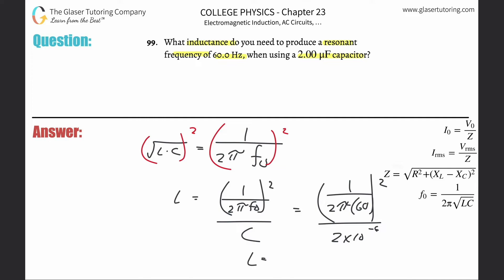And then let's plug it all in. So there's going to be 1 divided by parentheses 2π times 60, square it, the whole thing, then divide it by 2 times 10 to the minus 6. And this would be about 3.52 or so. And that's in terms of Henry. That's the inductance.